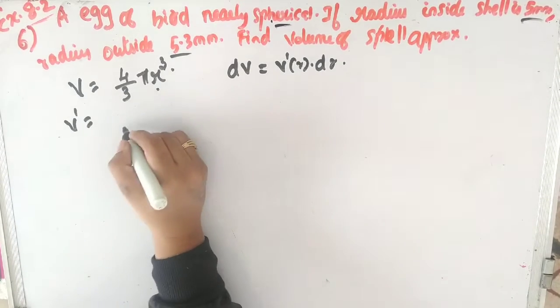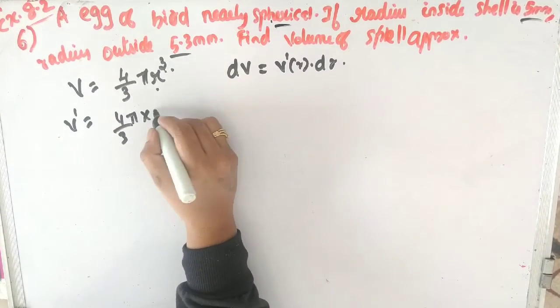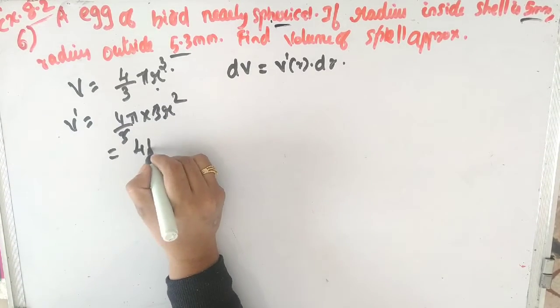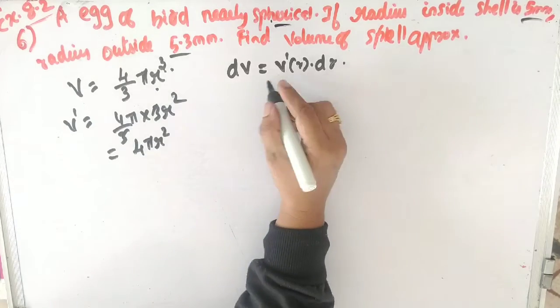dV equals V'(r) dr. V' of (4/3)πr³: the derivative of r³ is 3r². The 3 and 3 cancel, giving 4πr².